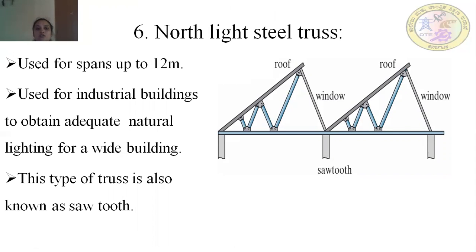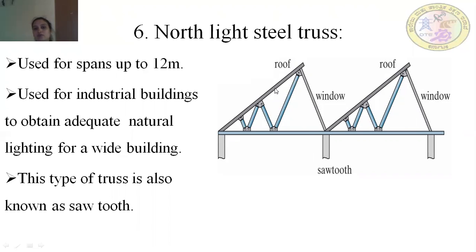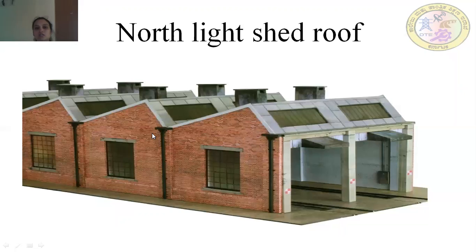The north light steel truss is used for spans up to 12 meters. It is used for industrial buildings to obtain adequate natural lighting for a wide building. This type of truss is also known as the sawtooth truss. It features a combination of sloping roof and window openings, providing both roof and natural light.